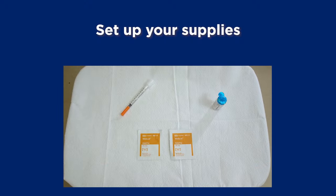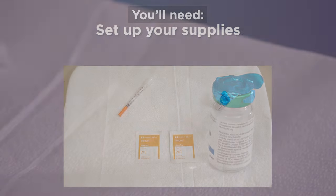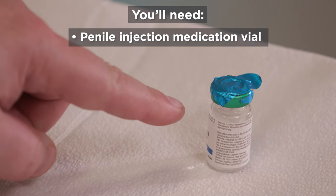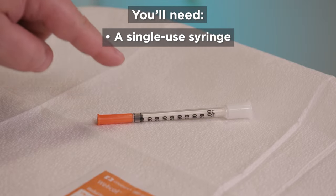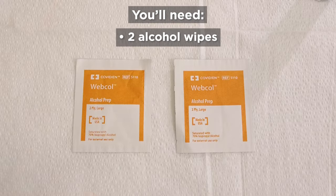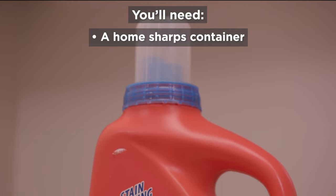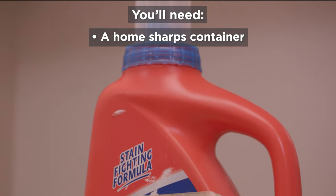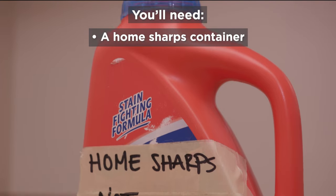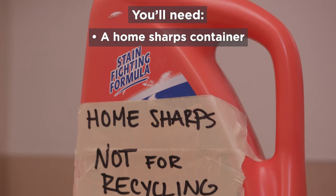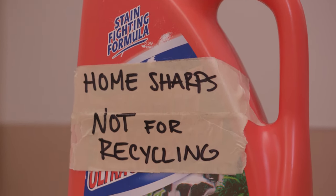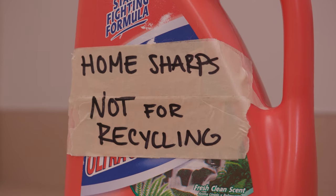First, set up your supplies on a clean surface. You'll need your penile injection medication vial, a single-use syringe, and two alcohol wipes. You'll also need a HomeSharps container to hold your used syringes. You can use an empty hard plastic container with a screw-top lid, such as a laundry detergent bottle. Label it HomeSharps, not for recycling.